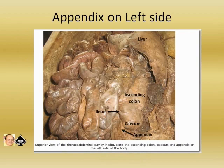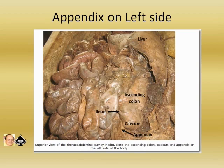This is actually a cadaver specimen with the appendix on the left side — a superior view of the thoracic-abdominal cavity in situ. Note the ascending colon, cecum and appendix on the left side of the body. The liver is on the left side, the ileum and cecum are also shown. So when somebody presents with left-side abdominal pain and tenderness, and the heart is on the right side, you have to think about the appendix being inflamed on the left side. Situs inversus with left iliac fossa pain is a clue to this.